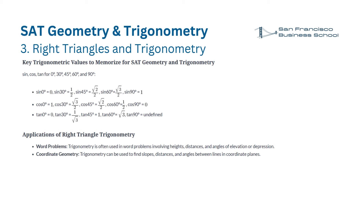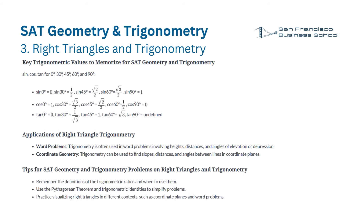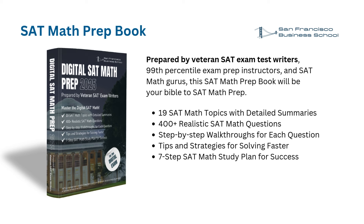Tips for SAT geometry and trigonometry problems on right triangles: remember the definitions of the trigonometric ratios and when to use them; use the Pythagorean theorem and trigonometric identities to simplify problems; practice visualizing right triangles in different contexts such as coordinate planes and word problems. We also have a 400-plus page SAT math prep book prepared by veteran SAT exam writers and 99th percentile instructors, available for purchase on Amazon.